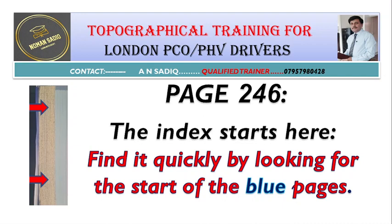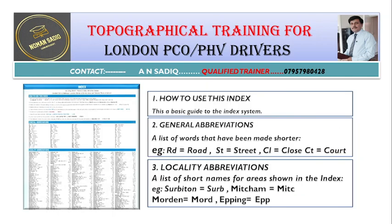You could find the index pages very quickly just by looking for the start of the blue pages. Here is a picture of the side view of the master atlas of greater London, and here you could find the blue pages very quickly to go to the index directly.